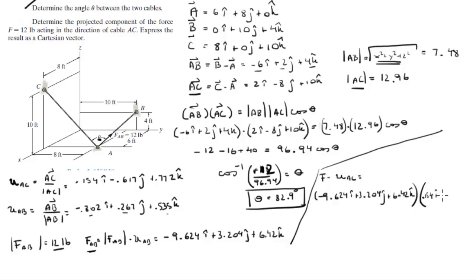0.154i minus 0.617j plus 0.772k. So basically we're doing the dot product between this vector and unit vector AC. Negative 9.624 times 0.154 is negative 1.48, 3.204 times 0.617 is 1.98, plus 4.96 which is 6.42 times 0.772, and it's a positive, so this comes out to be 1.5.